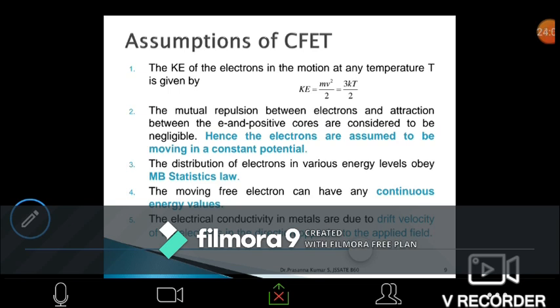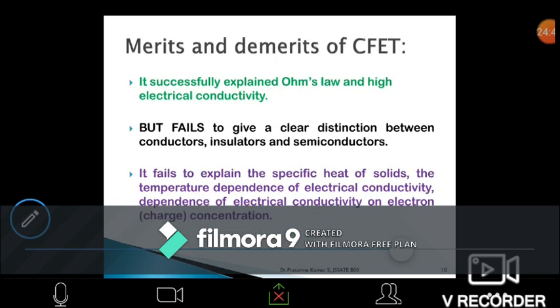They assume that electrical conductivity in metals is due to the drift velocity of the electrons. When electrons move, you have electrical conductivity. The velocity responsible is termed drift velocity. Under application of an external field, electrons moving in different directions become unidirectional. Electrical conductivity in metals is due to the drift velocity of electrons in the direction opposite to the electric field.